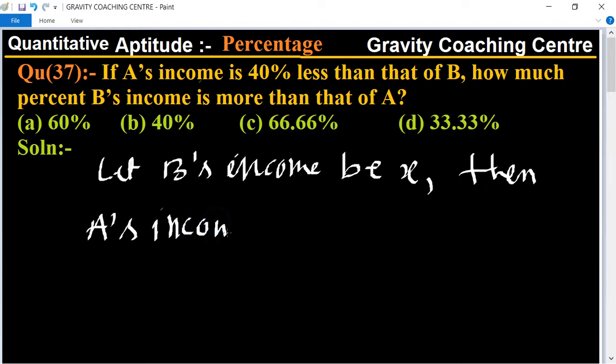So A's income equals 40% less than B, which means 60% of B's income. Therefore, 60/100 × X, canceling zeros and using table of 2, 3, and 5, equals 3X/5.